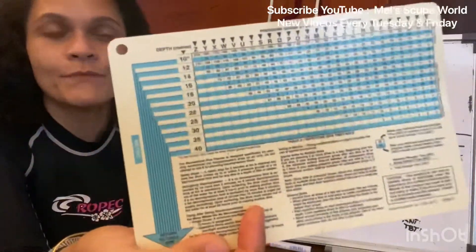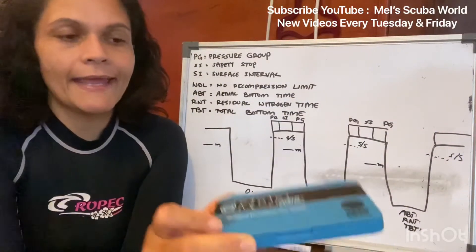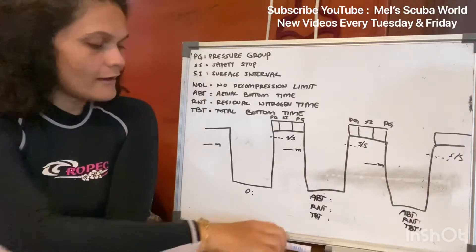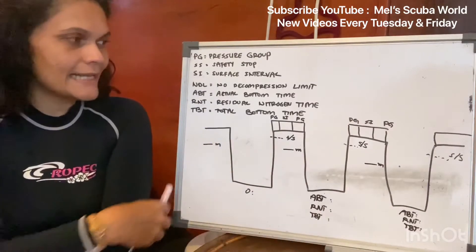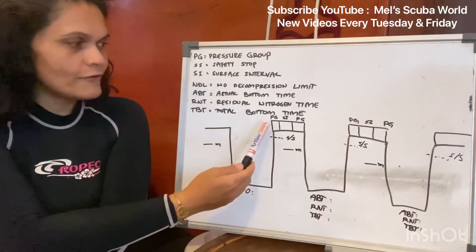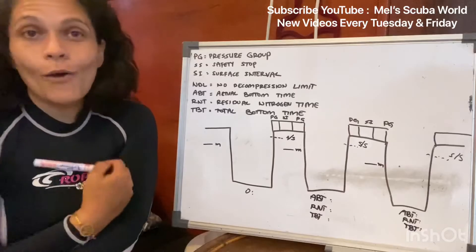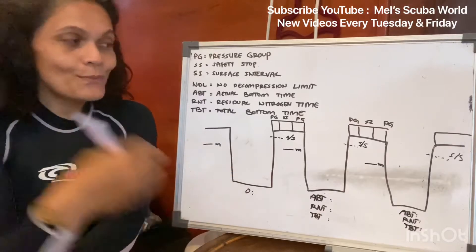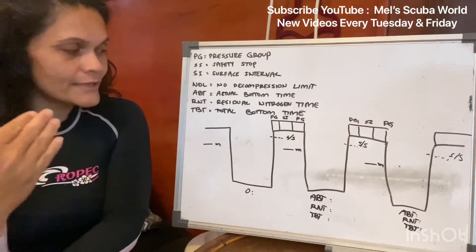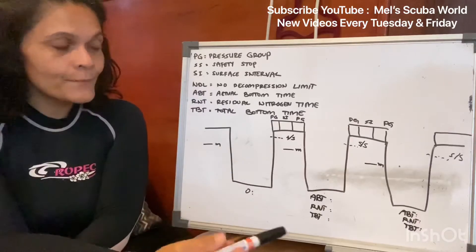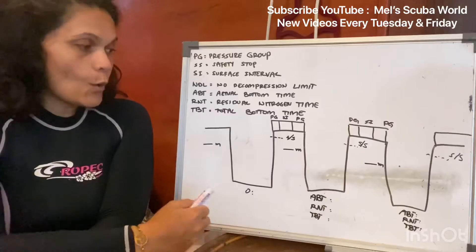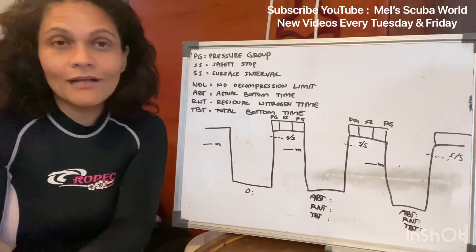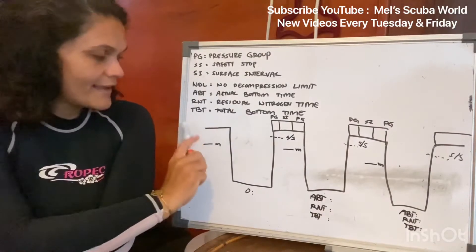Or you can use an eRDPml, which is the electronic one. What I have here on the board is basically a graph and elaboration of a few things that are in the chart. This is how I explain to my students when I talk about a dive planning graph, to make them understand easier about certain things and how to fill it in properly on the dive log or when they plan it. It's easier for them to remember if you tell it like a story.